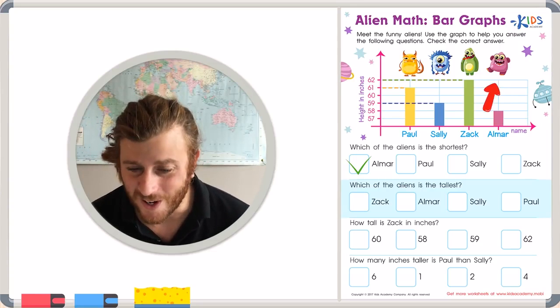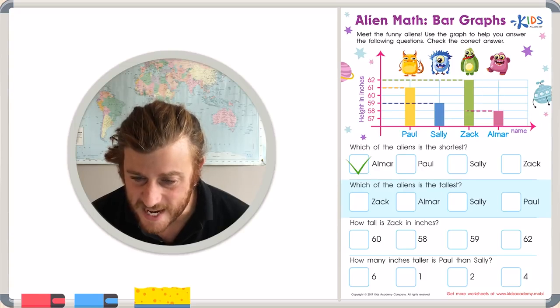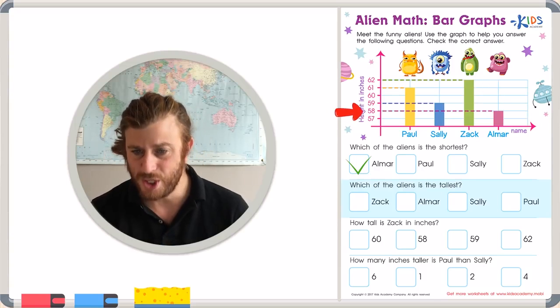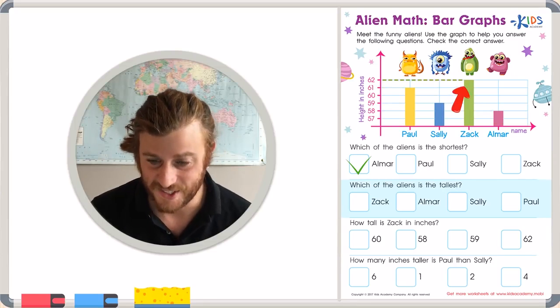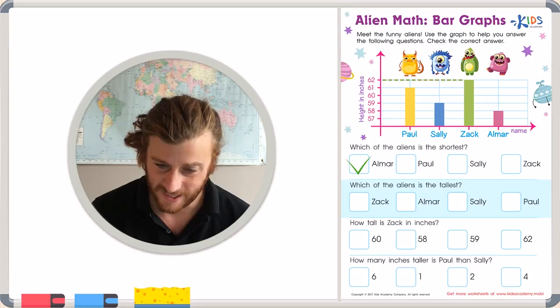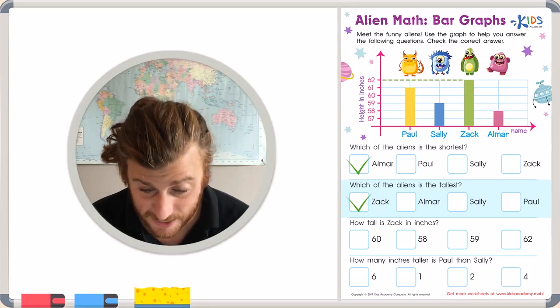Well, when you look at Omar, you remember that he is only 58 inches tall. So just by looking at these graphs, you can clearly see that Zach, our green alien, is the tallest. Let's put a check in Zach's box.